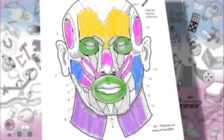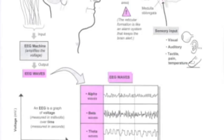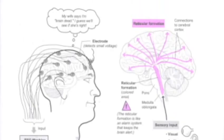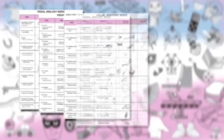Humor is also a component of the book. As you can see from this module about measuring brain waves, the thought bubble reads: 'My wife says I'm brain dead — I guess we'll see if she was right.' There are so many visual analogies in this book series that we decided to make a visual analogy index at the beginning of the book to showcase them all and make for easy reference for students.